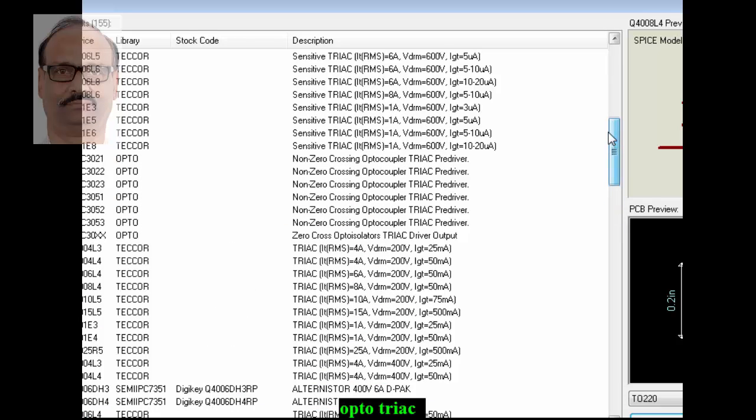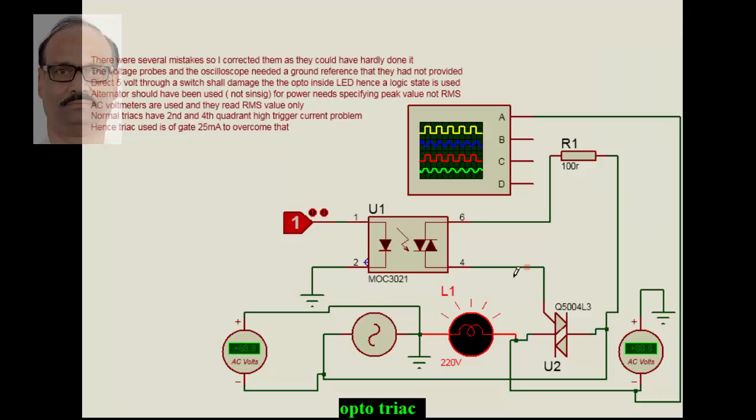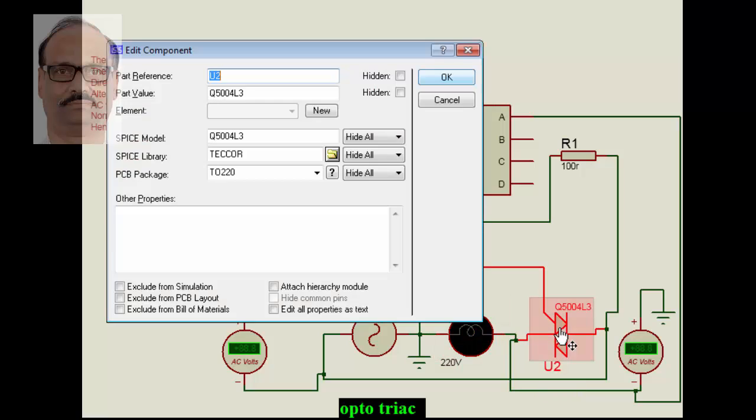We have selected a 43 somewhere here and we have taken a 25 milliampere gate current because that is what is the requirement. The gate current is more important rather than the voltage as far as the simulation is concerned here. Moreover, the TRIAC that you select should be TECOR type; any other type you select may have difficulty in simulation.